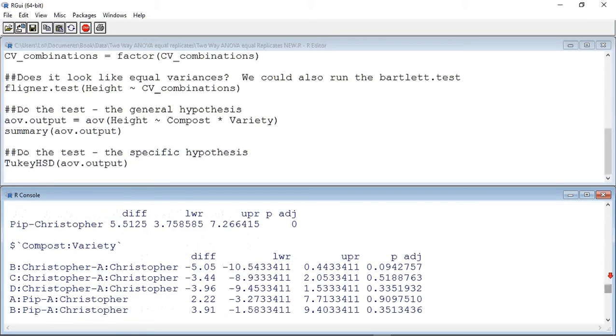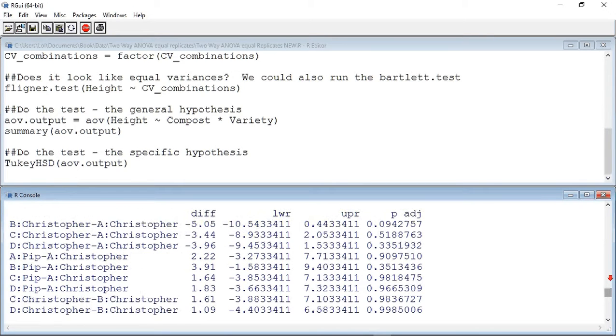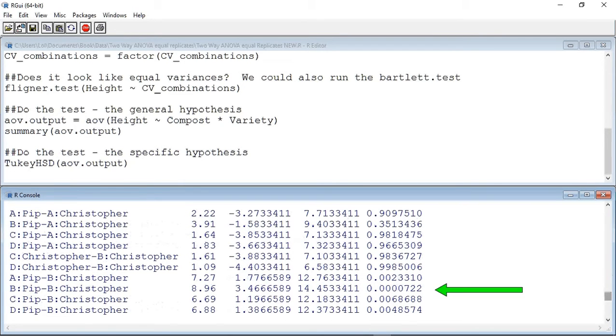Finally, we get some information about the interaction. You can see from the first column, we have every combination of compost and variety compared with every other compost and variety combination. In the first row, it is comparing Christopher grown in compost B with Christopher grown in compost A. We can see the p-value is equal to 0.094 approximately, a non-significant result. If we scroll down, we do find some significant results, such as comparing Pip grown in compost B with Christopher grown in compost B. Of course, this is not true, as the ANOVA has already informed us that there are no significantly different results due to the interaction of compost and variety.